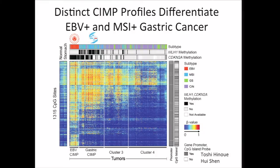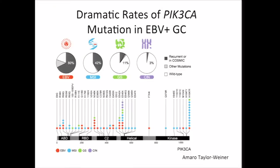Do we learn things from this? The answer is yes. For example, it's been known that 10–15% of gastric cancers have activating mutations of PI3-kinase. But by creating this categorization, we can see that EBV tumors have an overwhelming rate — overall 80% have PI3-kinase mutations, with roughly 70% being at recurrent cosmic sites. Whereas in the chromosomally unstable (CIN) tumors, it's down to 3%. That's something that hadn't been previously noted.